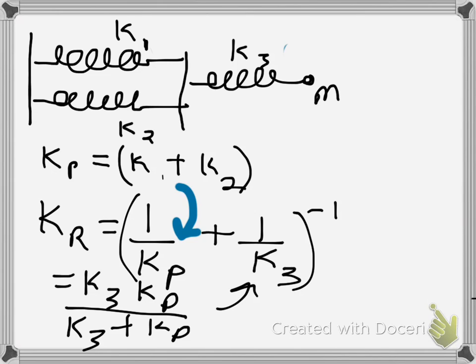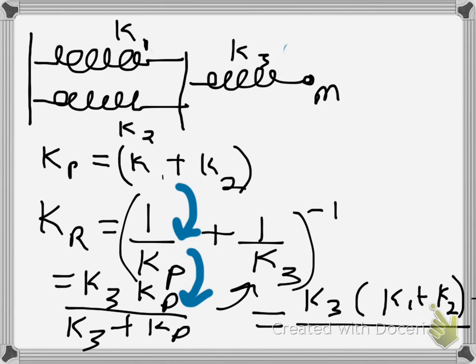and this will go to, if we now sub in what kp is, so I wrote kp, I didn't make the substitution, it's going to be k3 times k1 plus k2 over k3 plus k1 plus k2. So that is the resultant spring constant.